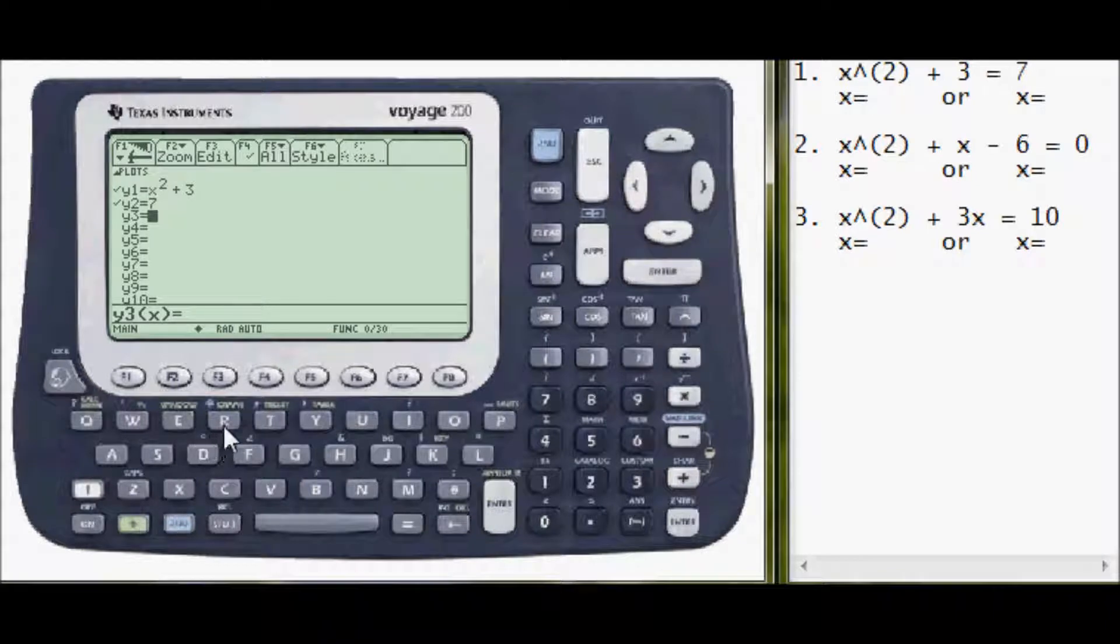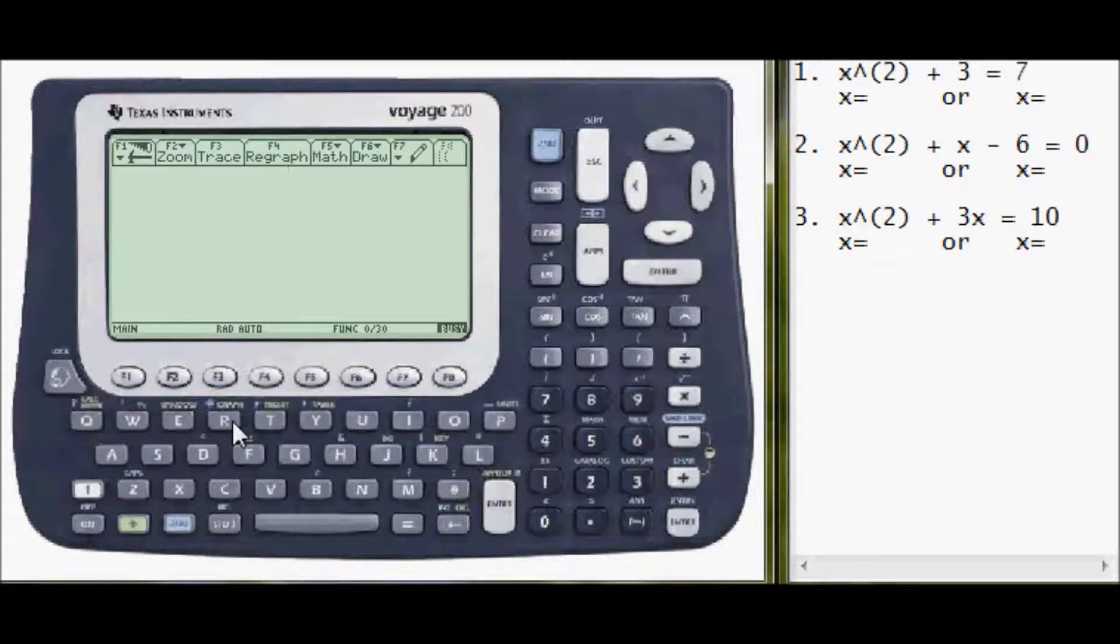So press the green diamond key and right over the R is graph. It'll say busy here in the lower right hand corner. If you want to pause it, you can press enter and it will pause. Just press enter a second time and it will start graphing.